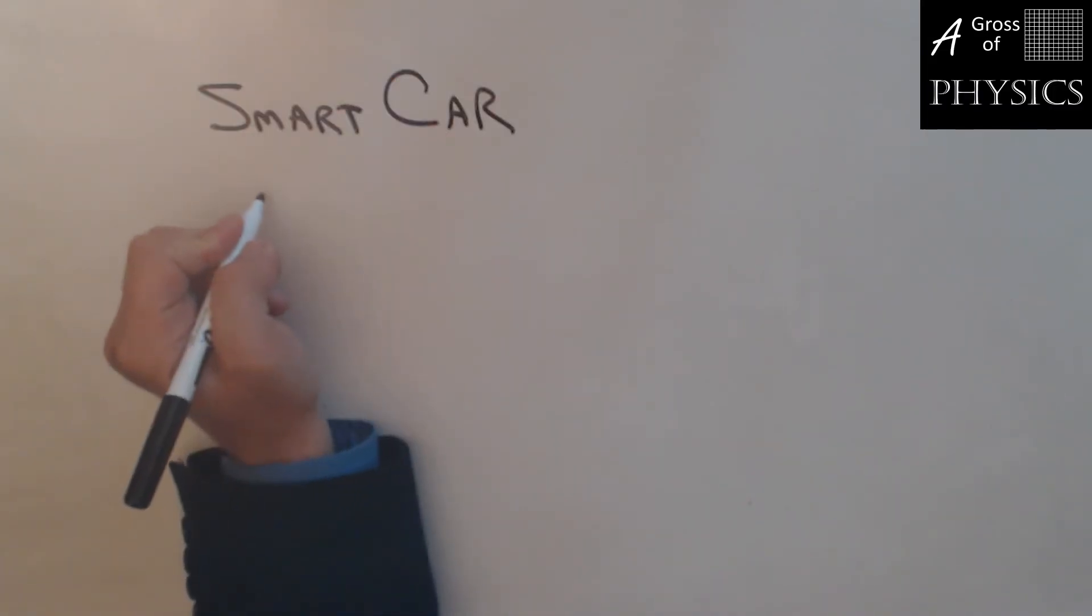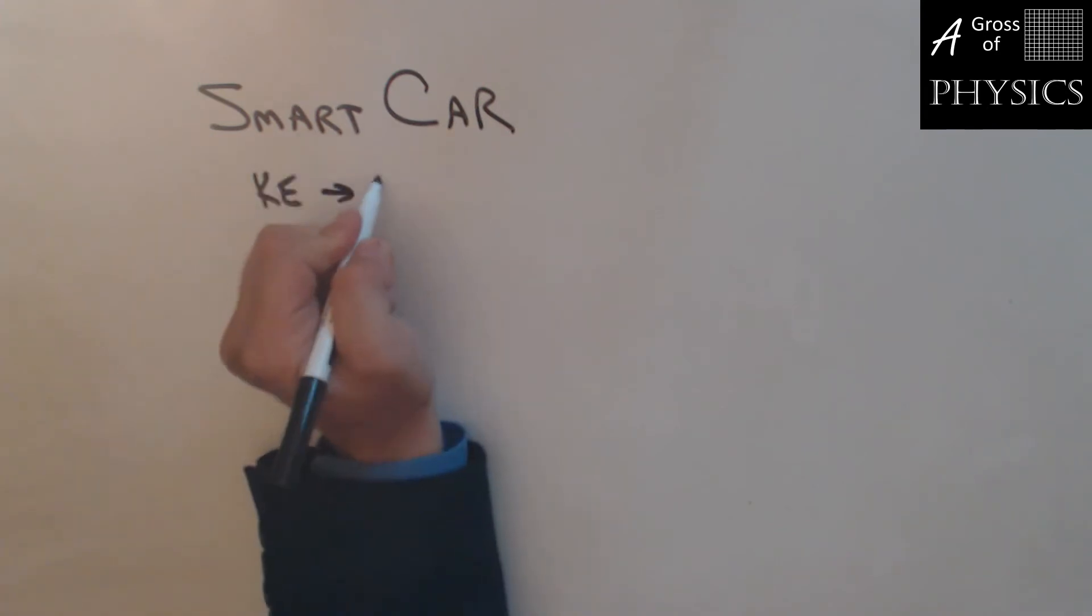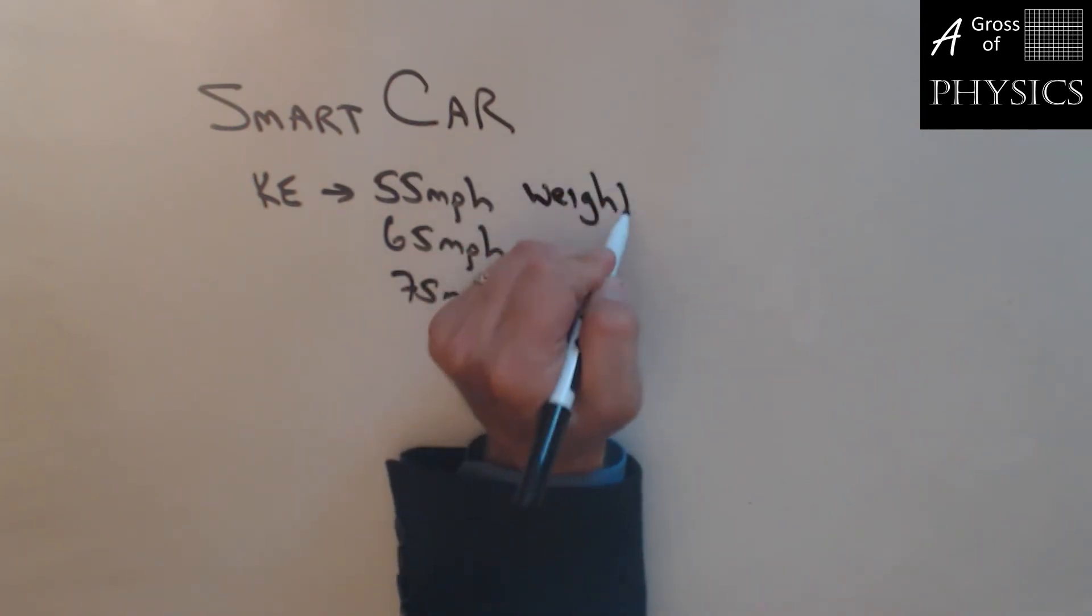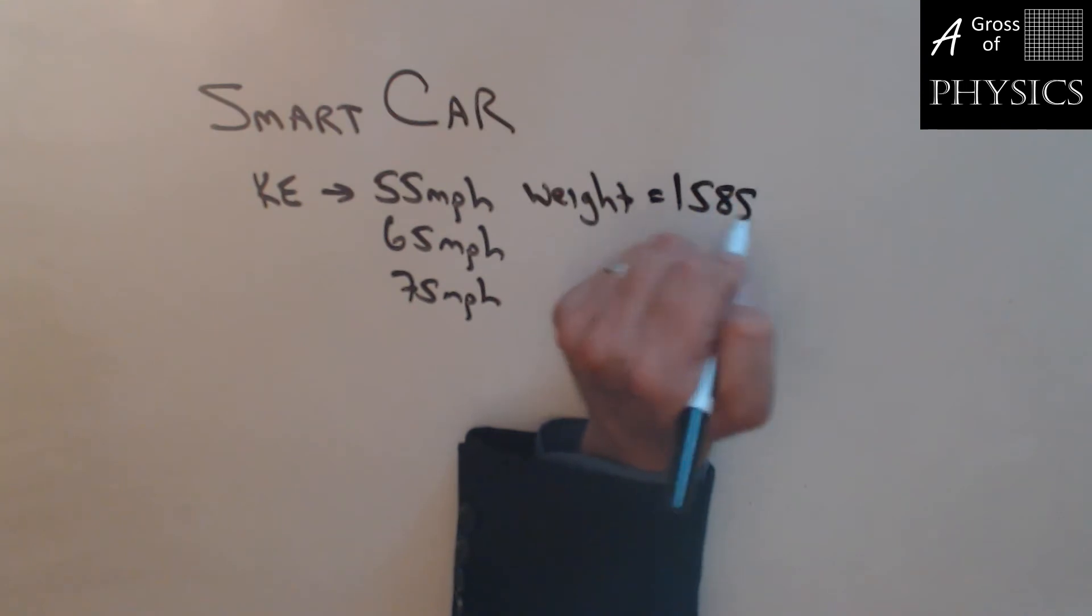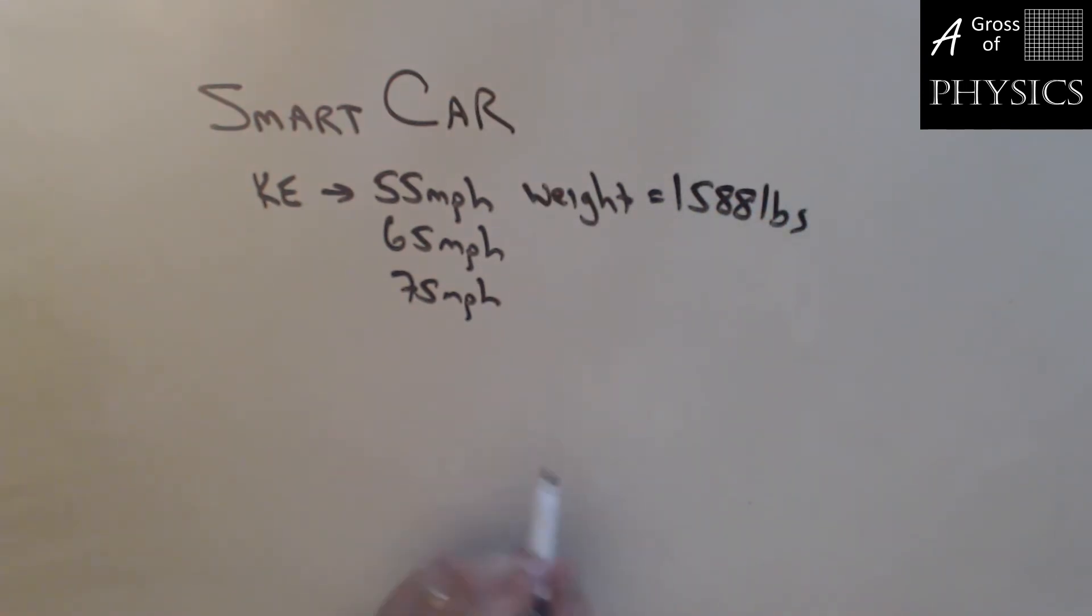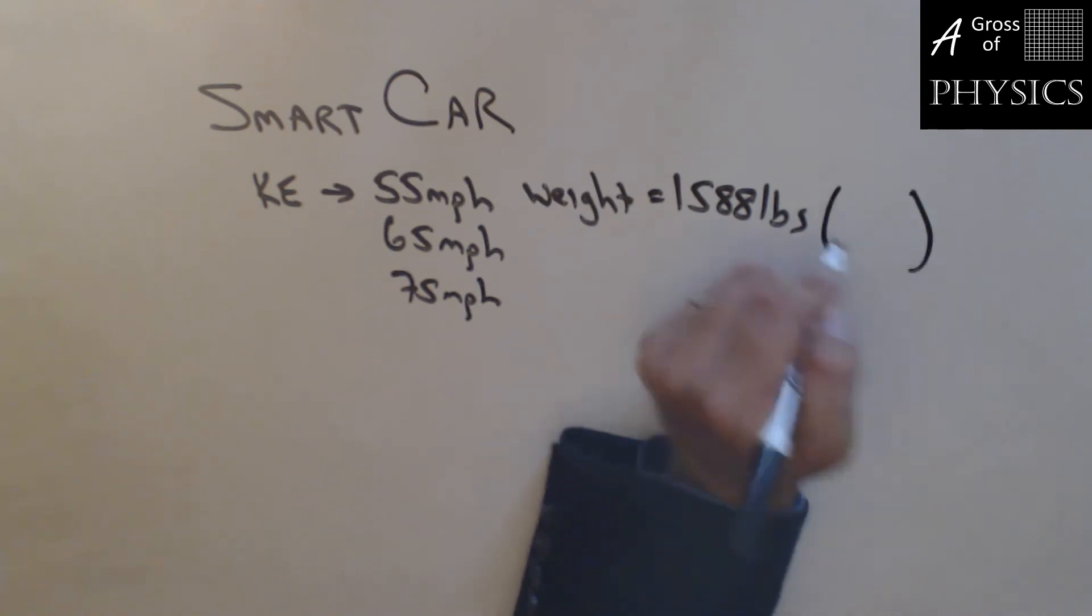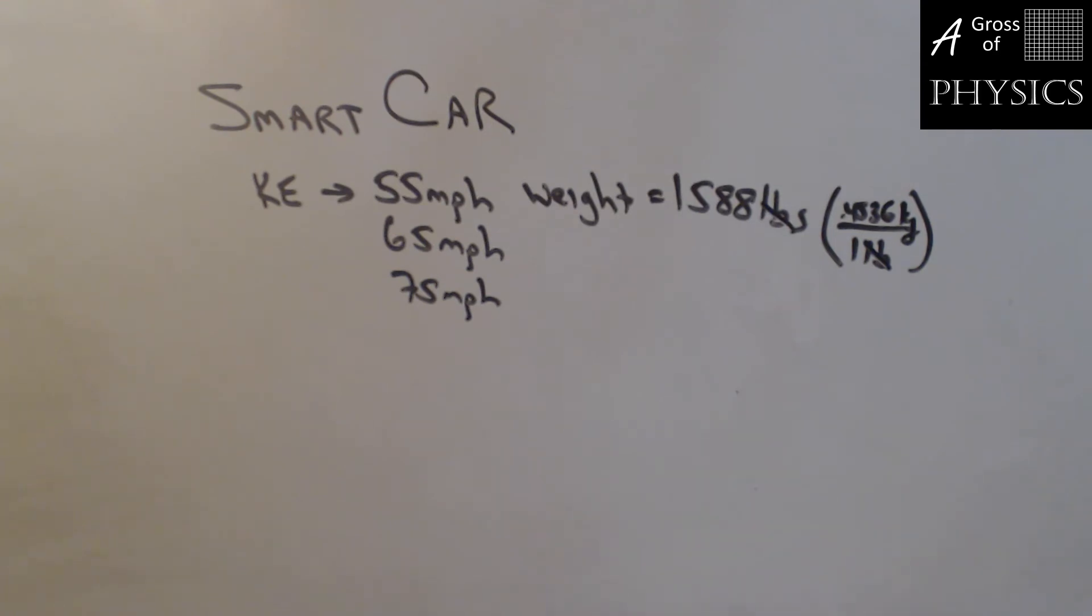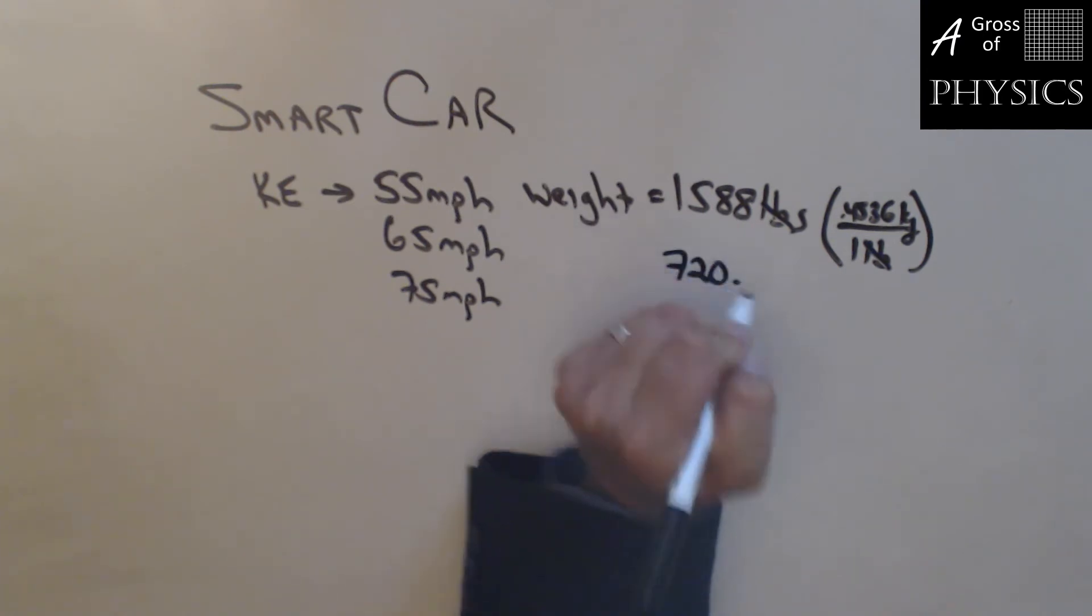For this next problem let's look at a smart car and find the kinetic energy at different speeds. We're going to look at 55 miles per hour, 65 miles per hour and 75 miles per hour. The weight of the smart car is 1588 pounds. The most important part of this problem is to first convert the pounds and the miles per hour. 1588 pounds, one pound is 0.4536 kilograms, so 1588 times 0.4536 gets me 720.3 kilograms. That's the weight we're going to use.